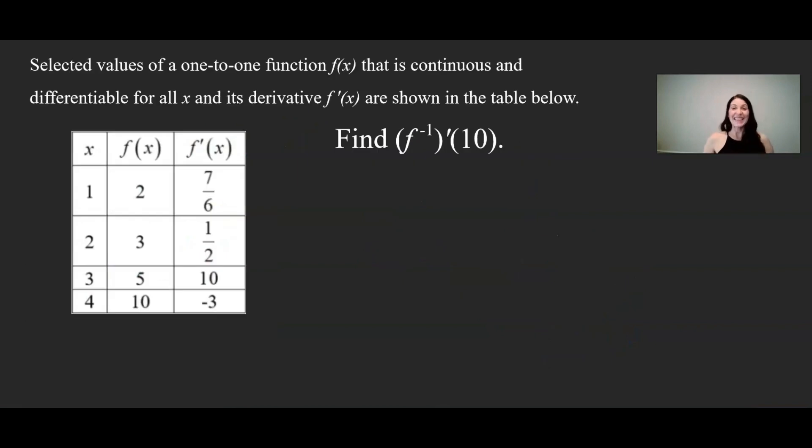So let's take a look at the example that we want to find here. So selected values of a one-to-one function f(x) that is continuous and differentiable for all x and its derivative f'(x) are shown in the table below. And in this problem, we're going to try to find the derivative of f inverse evaluated at 10.